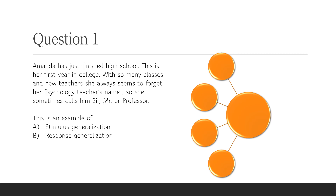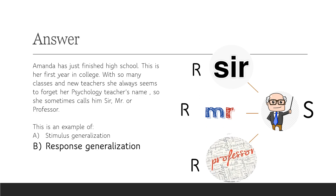Question 1: Amanda has just finished high school and this is her first year in college. With so many classes and new teachers, she always seems to forget her psychology teacher's name, so she sometimes calls him Sir, Mr., or Professor. Is this an example of stimulus generalization or response generalization? The answer is response generalization. We have only one stimulus — the psychology teacher — and different responses: Sir, Mr., and Professor.